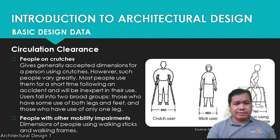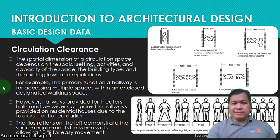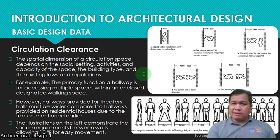The spatial dimension of a circulation space depends on the social setting, activities, and capacity of the space, the building type, and the existing laws and regulations. Here in the Philippines, we have TD1096, or the National Building Code of the Philippines, which states the minimum dimension of aisles and hallways so that two people can pass through — usually around 1.2 meters.